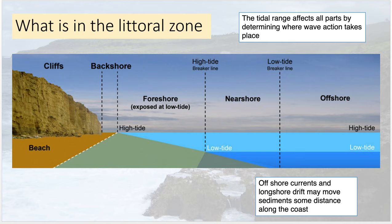In the littoral zone we've talked about backshore, foreshore, nearshore, and offshore. The backshore is between the cliffs and where the high tide reaches. The foreshore is the area exposed at low tide — between high tide and low tide. The nearshore is the part of the ocean that extends from the lowest point of low tide to the breaker line, where waves break. Then the offshore is seaward of the nearshore — these definitions are somewhat woolly and we'll come to them shortly.